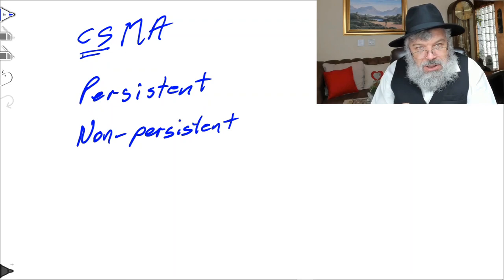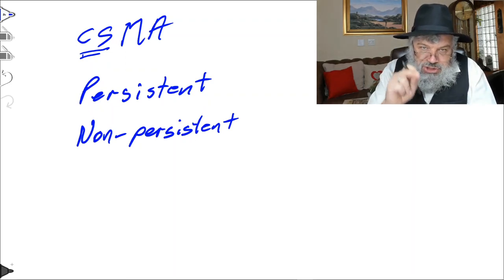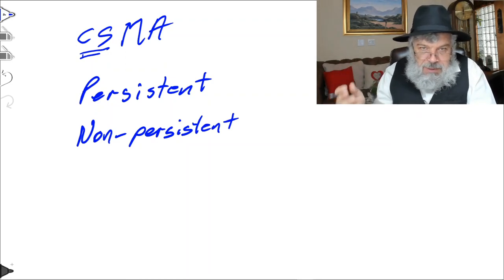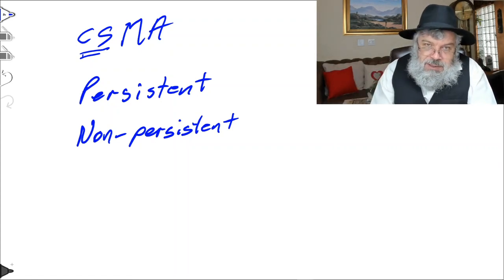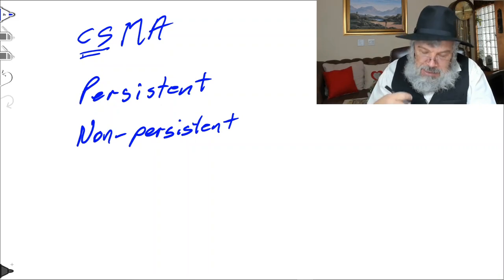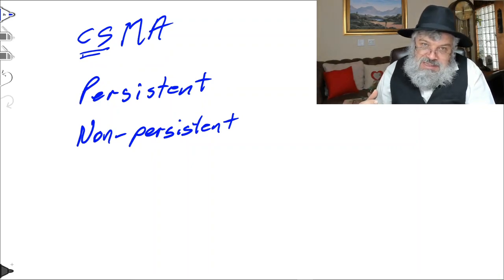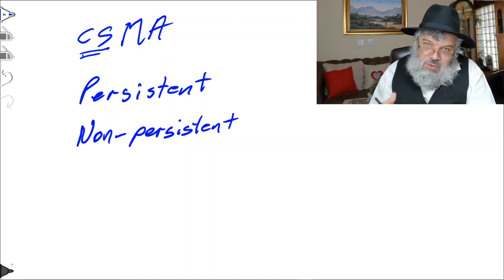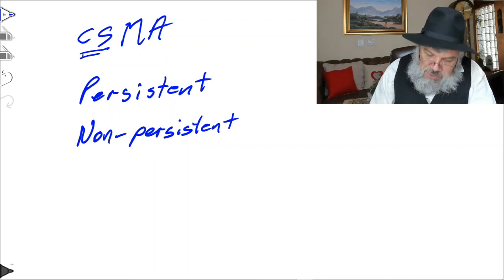With non-persistent, you check the medium. If it's busy, you go away and do something else — wait a random period of time — then come back again. If the medium is empty, you transmit. If not, you go back again. You can have an infinite wait and may never get a chance to transmit, but at the very least you will not cause collisions because you are waiting. Another option is P-persistent.